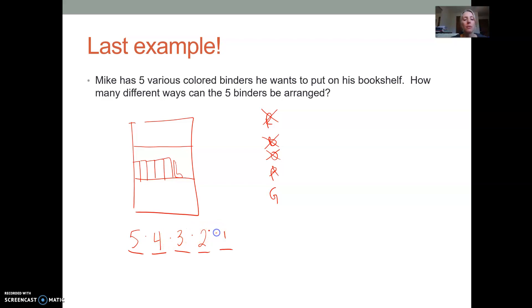Then what does the counting principle tell us to do? It tells us multiply these together. When we multiply five times four times three times two times one, we do end up with, well, let's see, that's 20, that's 120. So there'd be 120 ways that Mike could arrange these binders.